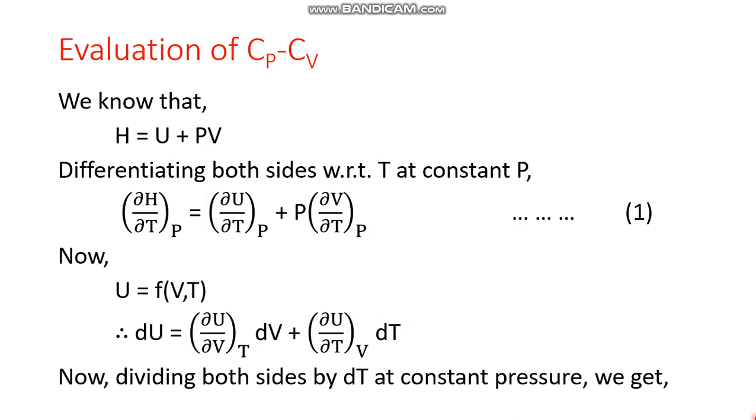In order to do this, we have to start from the expression of enthalpy, which is U plus PV. This is the expression of enthalpy. Now let's differentiate both sides of this equation with respect to temperature, keeping the pressure constant.